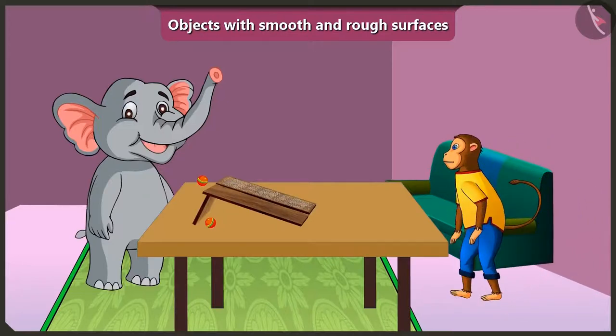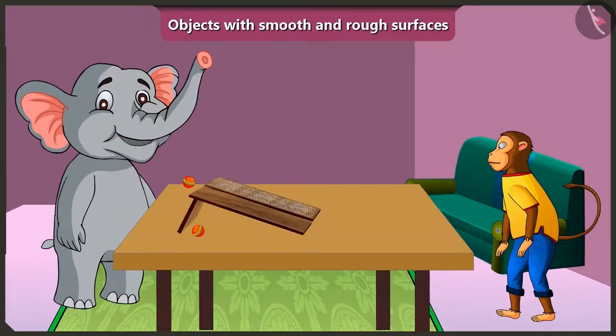Hey Appu, what are you doing here? Look Jaggu, I have two similar balls. When I roll them like this, the ball rolls down faster on this wooden slope. But on this other slope, the ball rolls down slowly. Why is it so Jaggu?